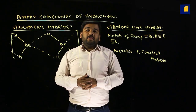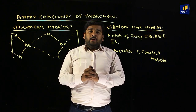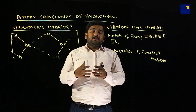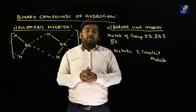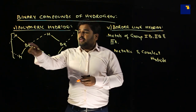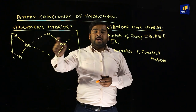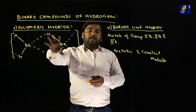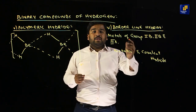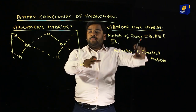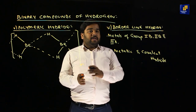The fifth type is polymeric hydride. When we were studying ionic hydrides, we mentioned that beryllium and magnesium form polymeric hydrides. Polymer means 'poly' (many) molecules. In the structure, the solid lines represent beryllium–hydrogen bonds, while dotted lines represent intermittent bonds forming polymer chains with other molecules. The same applies to magnesium hydride. That is why we write 'n' instead of a fixed number.